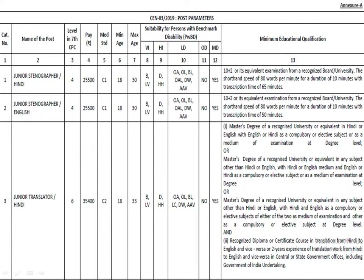The next post is Junior Translator Hindi. The pay band is 35,400, with a minimum age of 18 and maximum age of 33. The education qualification requires a Master's degree in Hindi — but if you studied Hindi, English must have been studied as an elective subject, and vice versa.